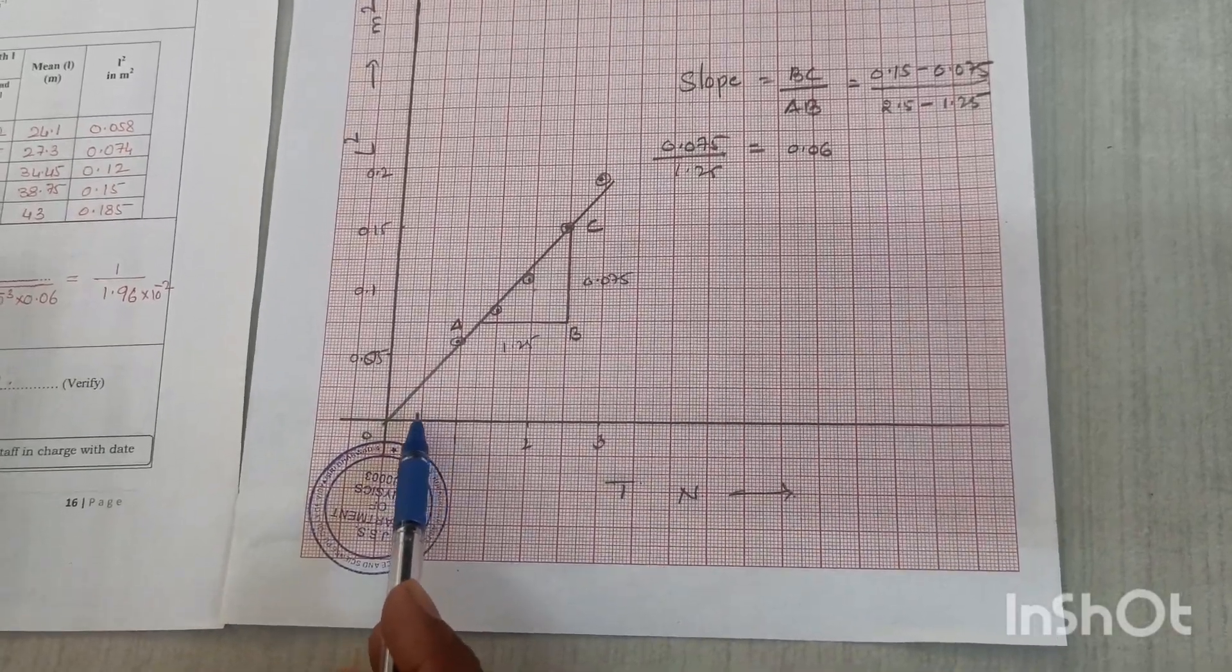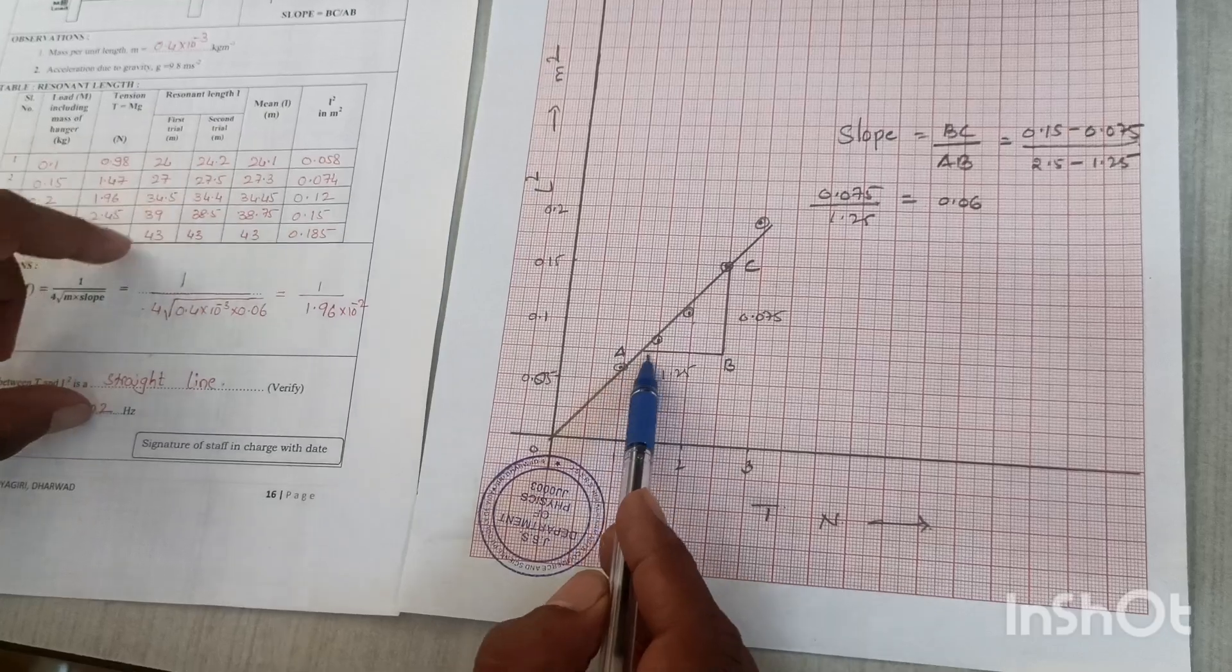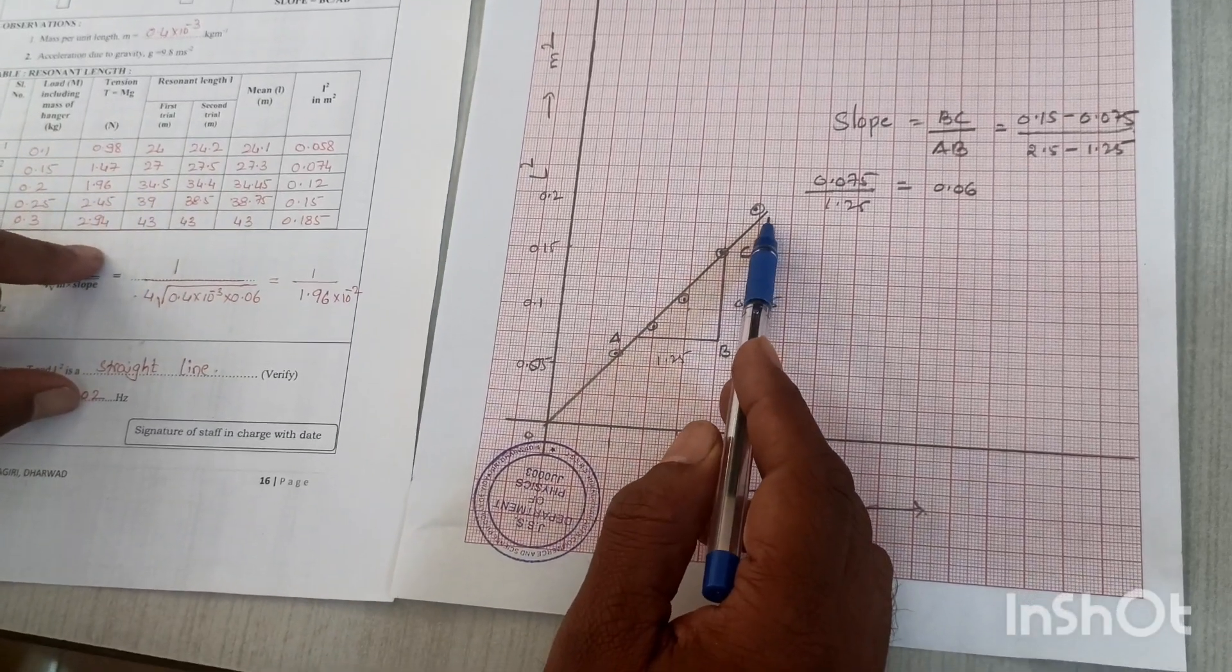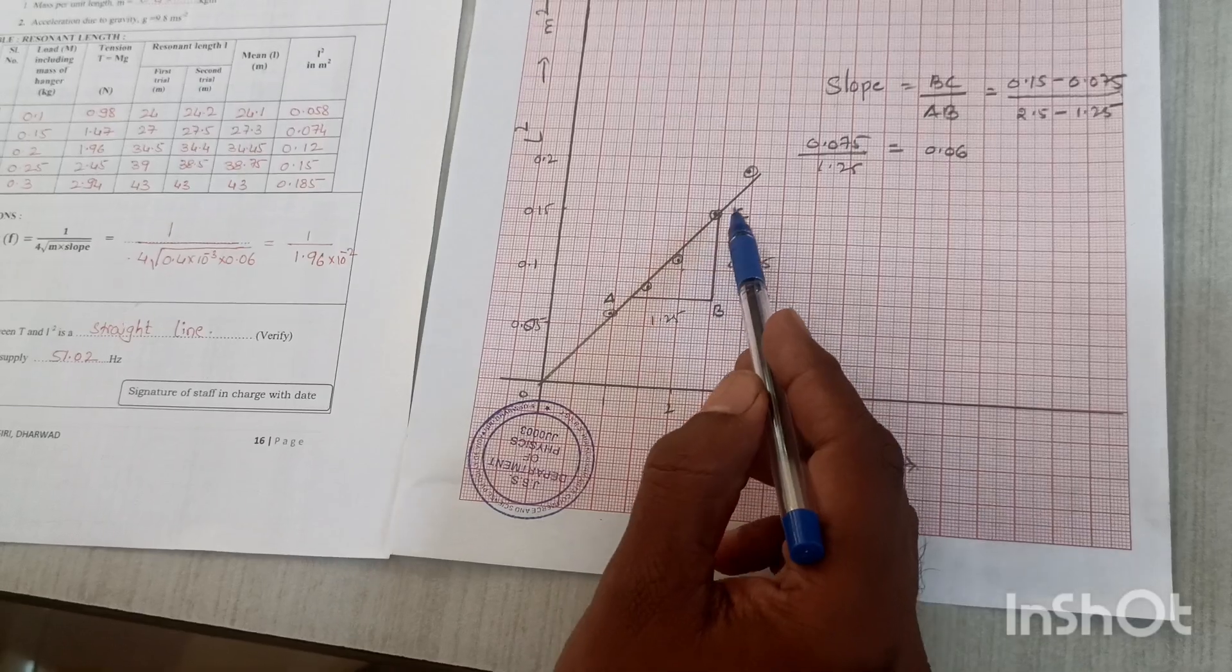By plotting the points, starting with 0.98 and 0.058, all points are marked on the graph sheet and a straight line passing through them is drawn.